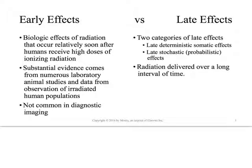Early effects are those biologic effects that occur relatively soon, and they're typically related to a very high dose of radiation - like two gray or more whole body. In radiation therapy, we give two gray to a targeted area and might see some of these early effects there. A lot of the evidence comes from animal studies on mice that have been extrapolated into human populations, as well as some irradiated human populations like the Hiroshima and Nagasaki survivors, as well as Chernobyl survivors.